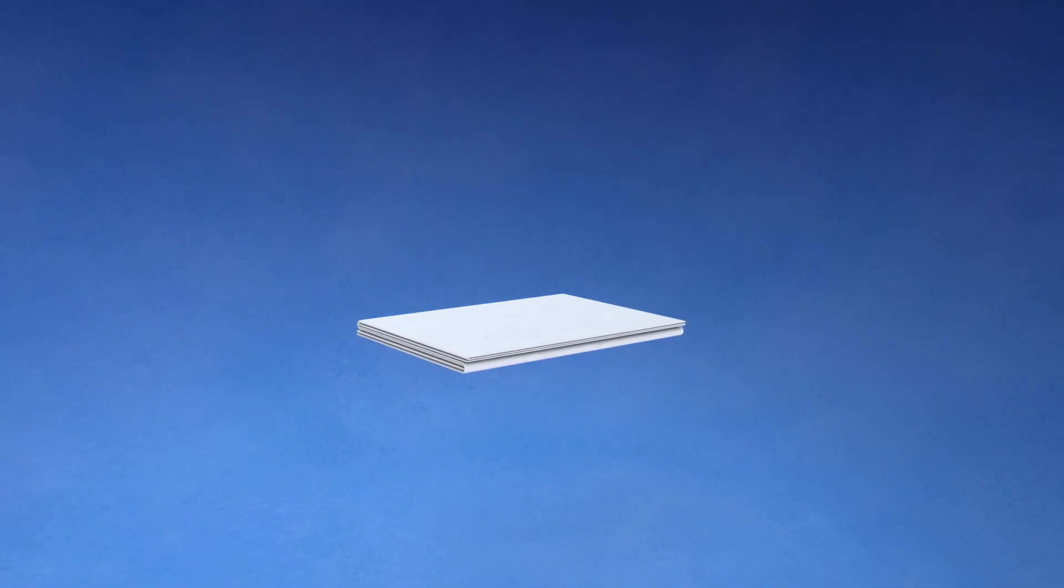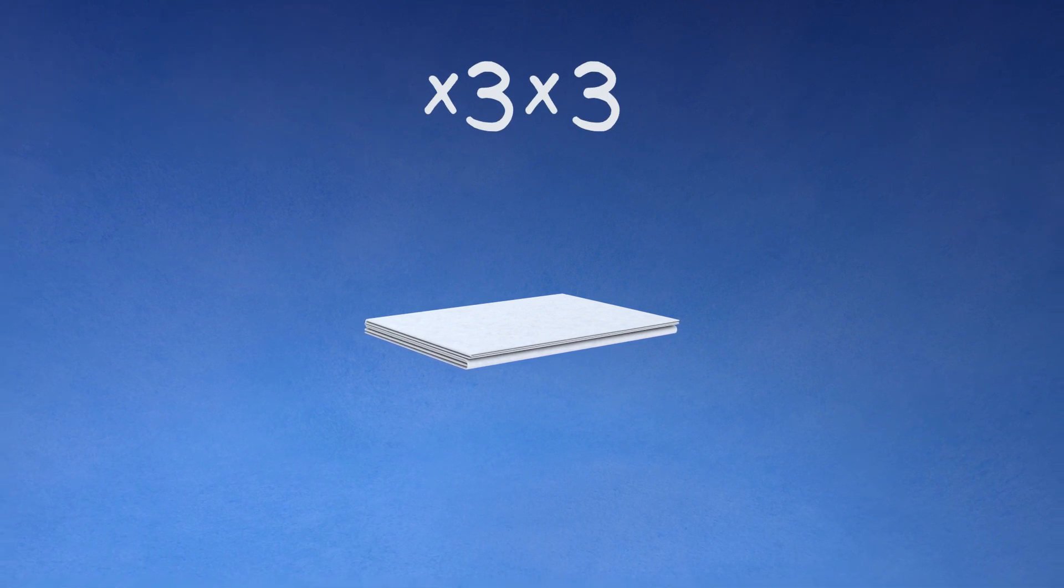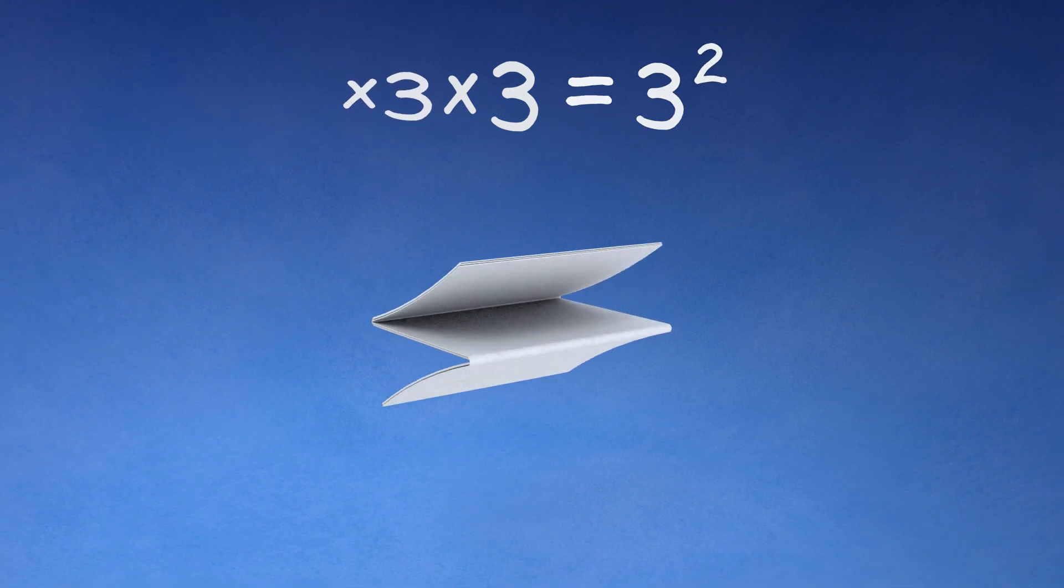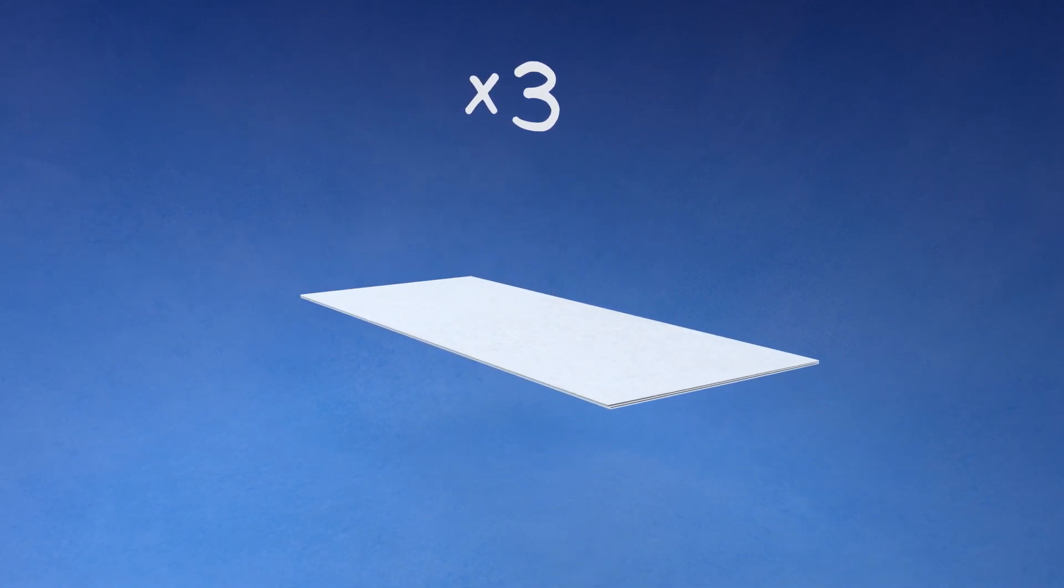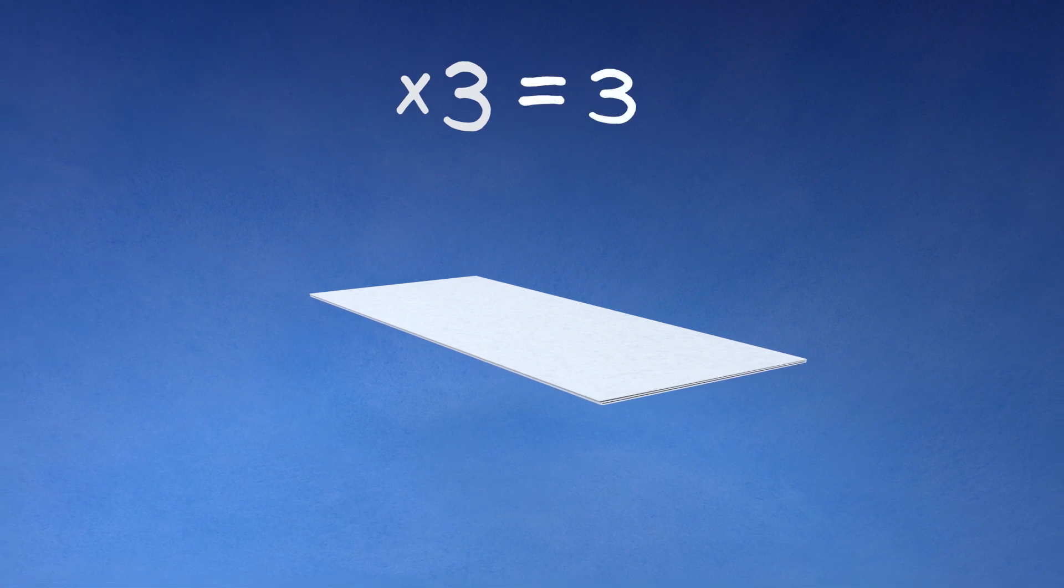We'll start with our paper folded into thirds two times. With two folds, this could be described as three to the second power. If we unfold one stage, the page has only one triple fold. This would be three to the first power.